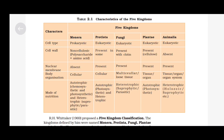In Protista, the cell type is eukaryotic, cell wall is present in some, nuclear membrane is present, and mode of nutrition is autotrophic (photosynthetic) and heterotrophic. In Fungi, the cell type is eukaryotic, cell wall is present with chitin, nuclear membrane is present, body organization is multicellular loose tissue, and mode of nutrition is heterotrophic — that is saprophytic and parasitic.